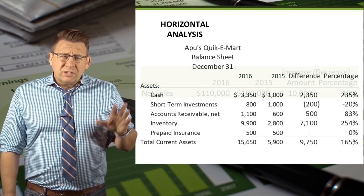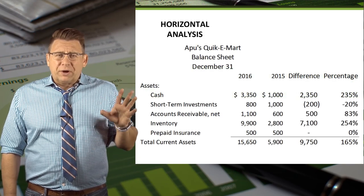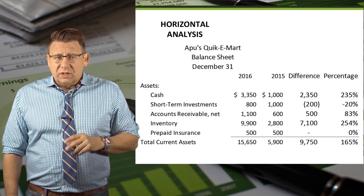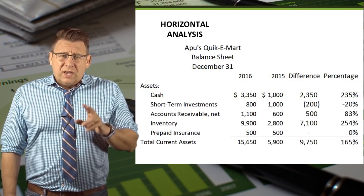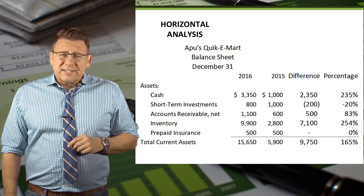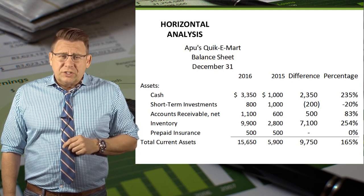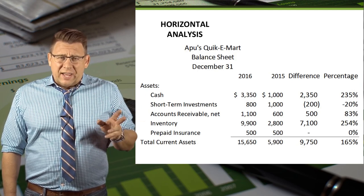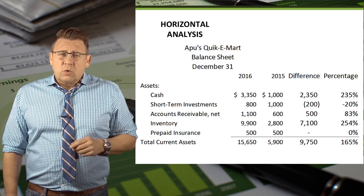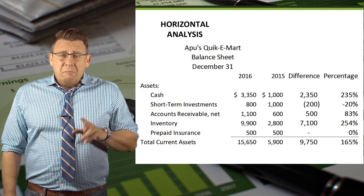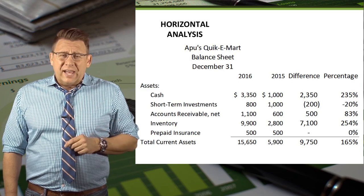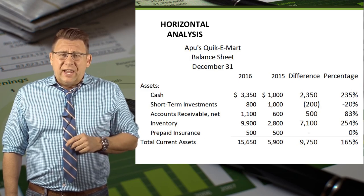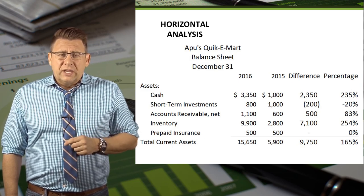Here is a more comprehensive example of Apu's Quickie Mart, the current asset section of the balance sheet. You can see that current assets increased quite a bit, mainly due to cash and inventory increases.